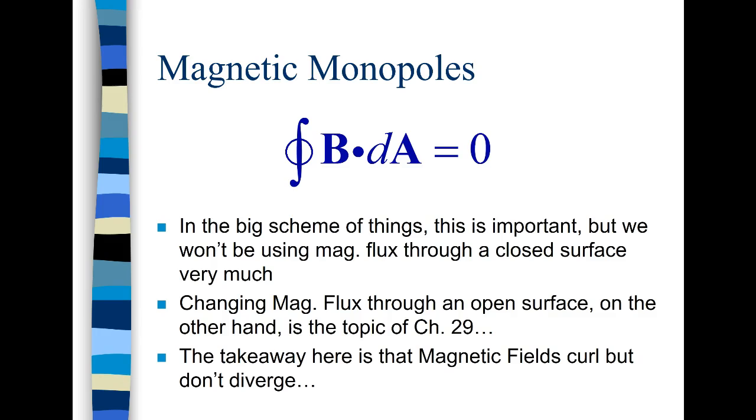And so the takeaway here is that magnetic fields curl but they don't diverge. Okay. So next time we're going to be talking about magnetic forces on wires and torques on a wire loop.